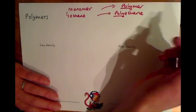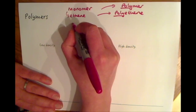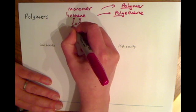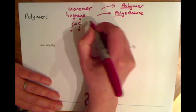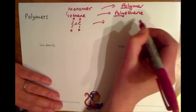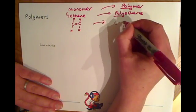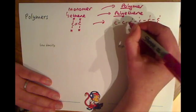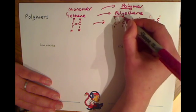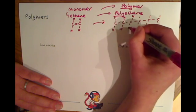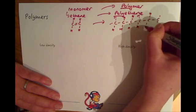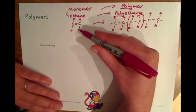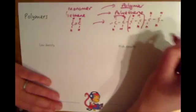If you had ethene — which is simply two carbons with a double bond and hydrogens — you can turn that into a repeating chain polymer. You break the double bond and you just have a long chain of ethene molecules all joined up with no double bond, and we call it polyethene. You can see all of these are repeating the same unit — very much like ethene but without the double bond.